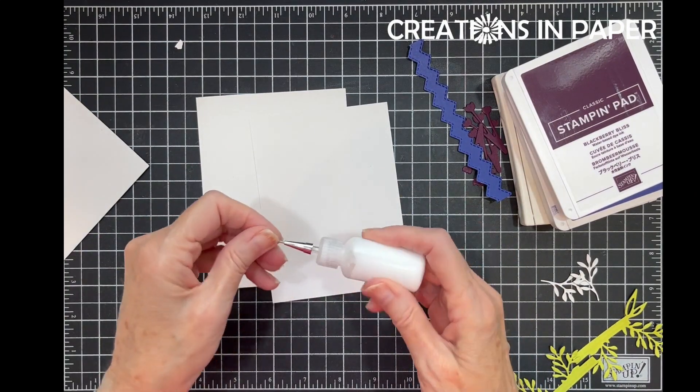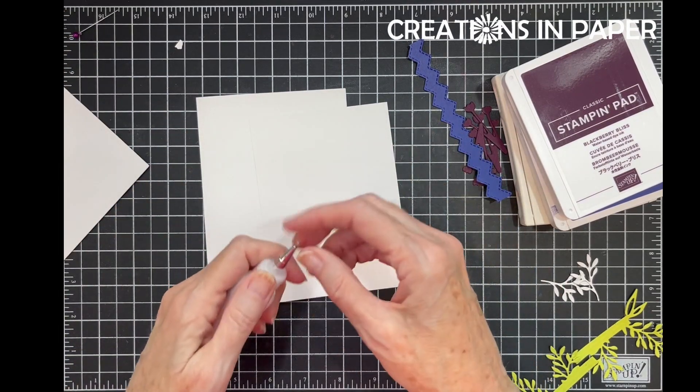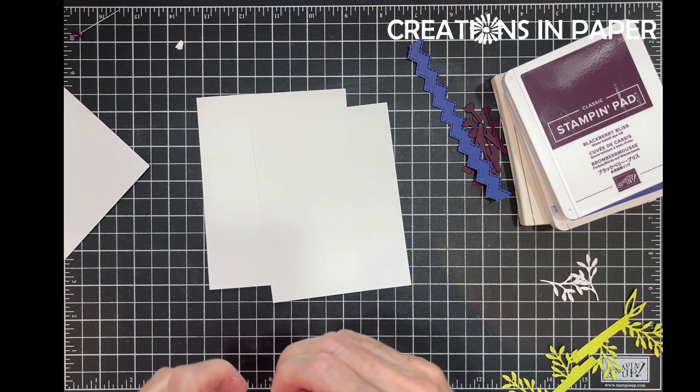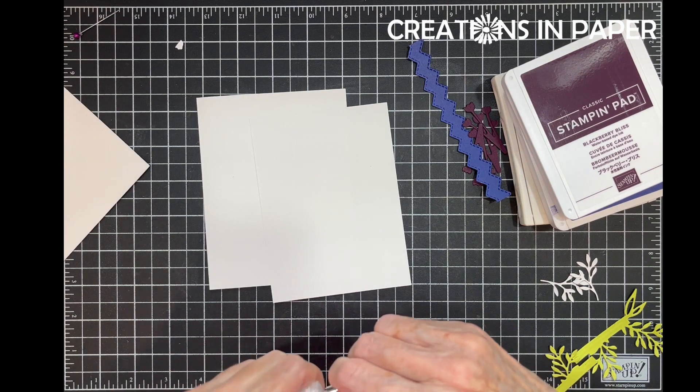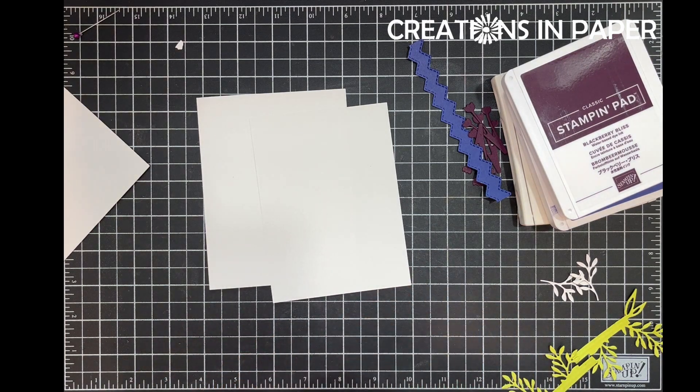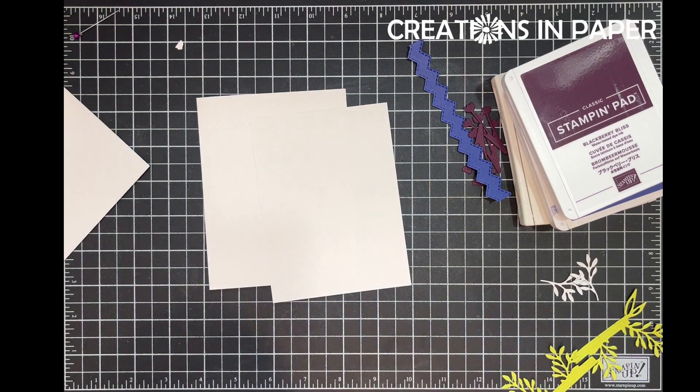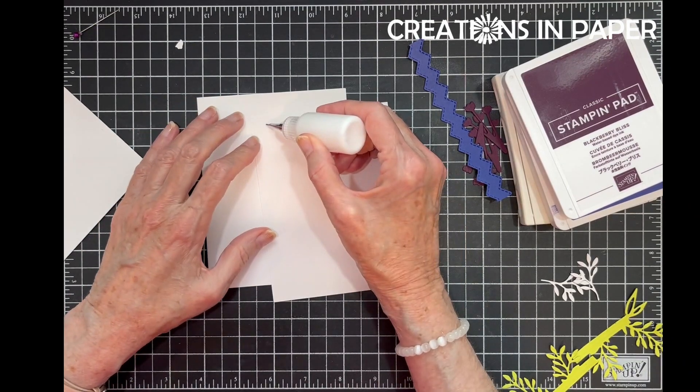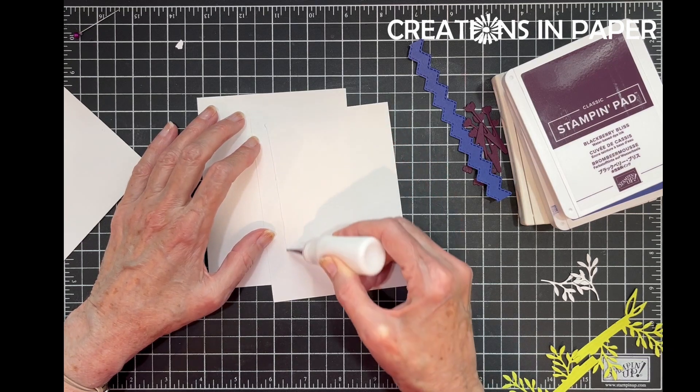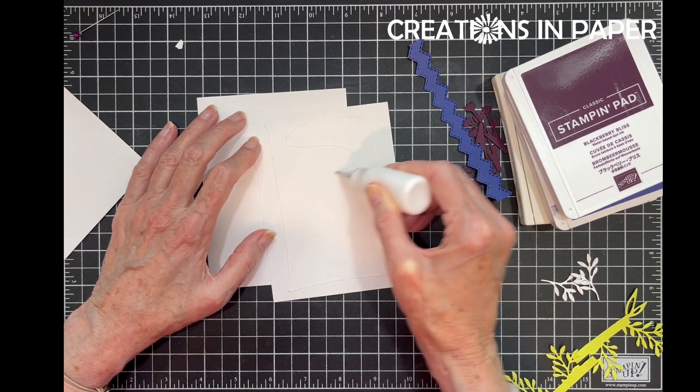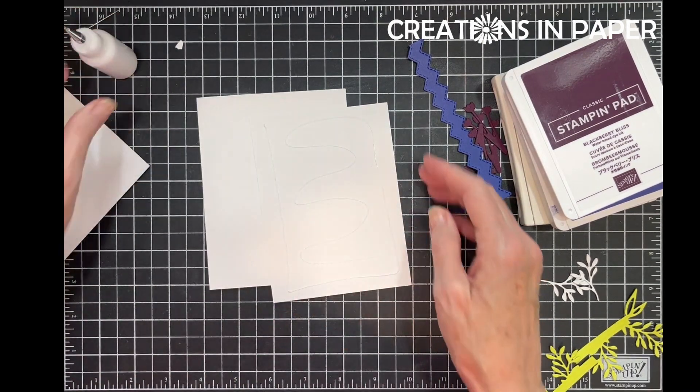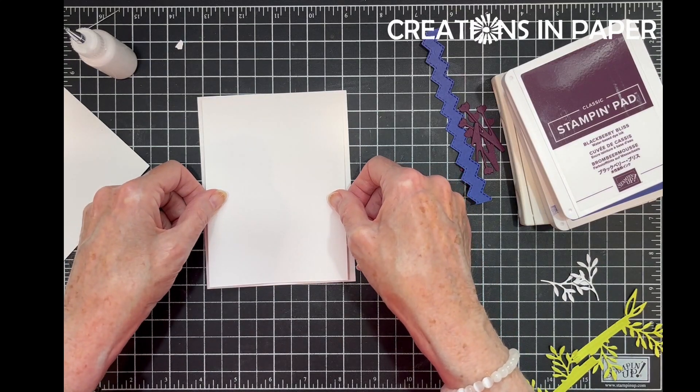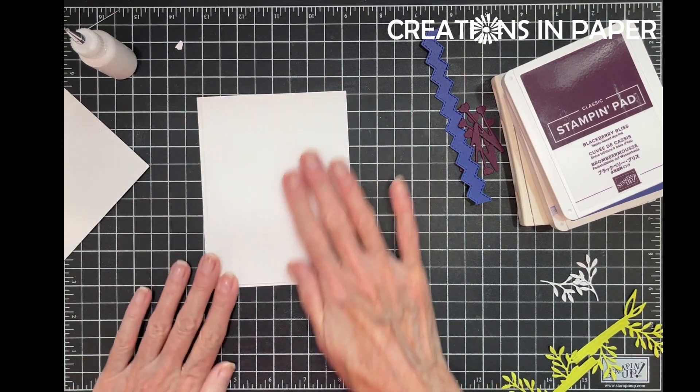All right, sorry about that. I have been doing a lot of crafting lately because I'm traveling. The whole silver tip came out, but it seems to be doing okay. So I'm going to add this to my card base and I am centering it. It's a challenge since it's white on white.